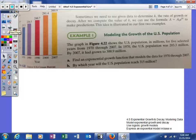Let's look at this. It says sometimes we need to use given data to determine k, the growth rate or decay rate. After we compute this value for k, we can use the formula A = A₀e^(kt) to make predictions. That's what people get paid to do: notice trends in math, trends in what's going on in the real world, and then use that information to help us predict in the future.